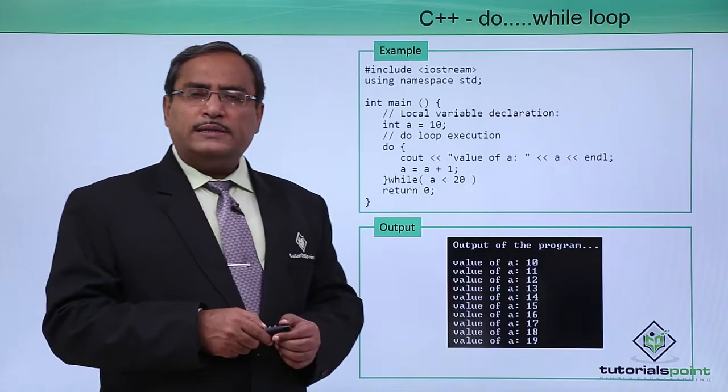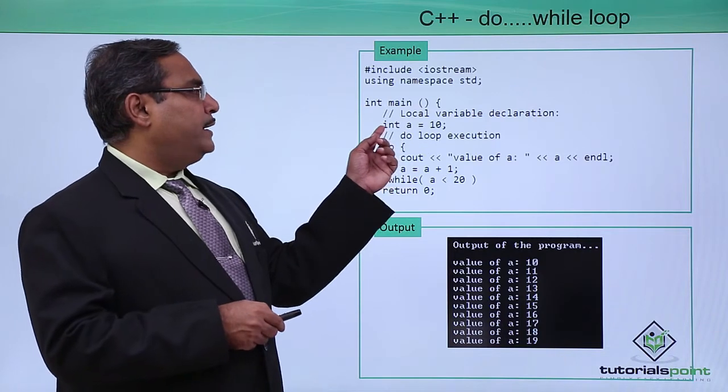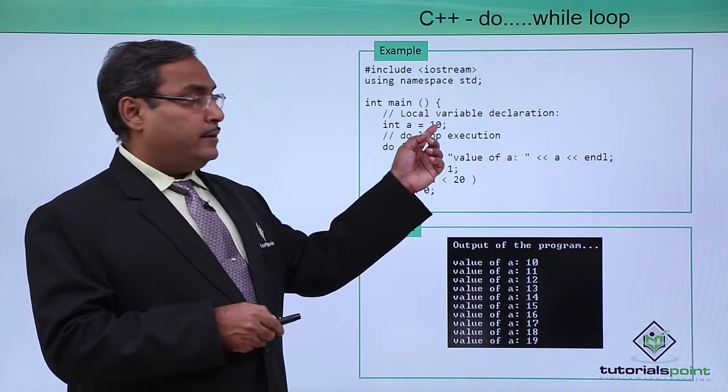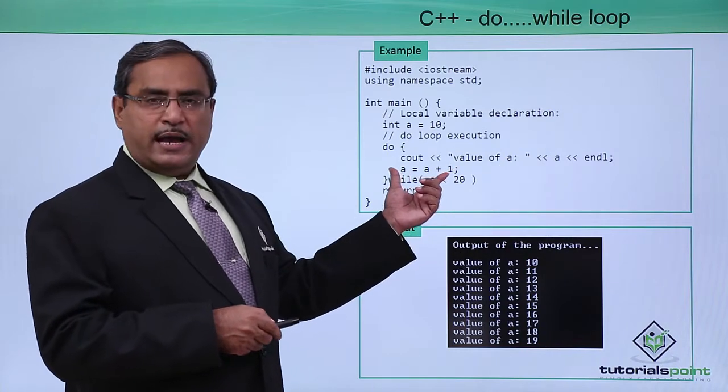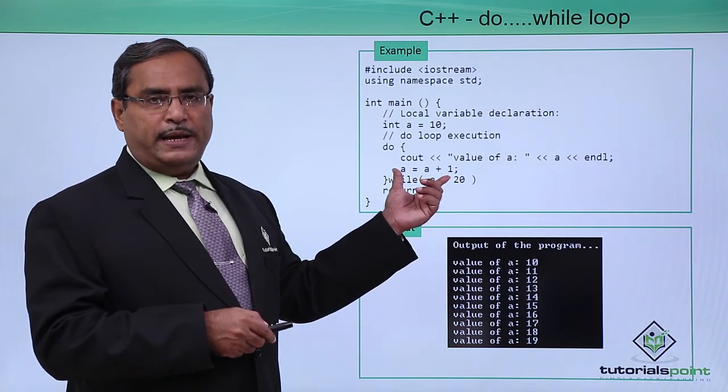Now let us go for one sample program. Here we have written int a equals 10. In the do block we are printing this value of a and each and every time we are increasing the value of a by 1.